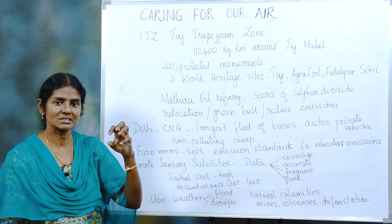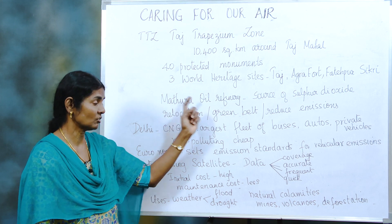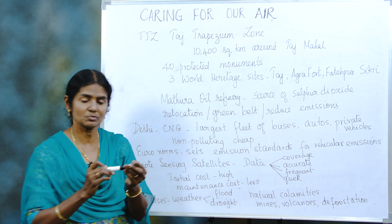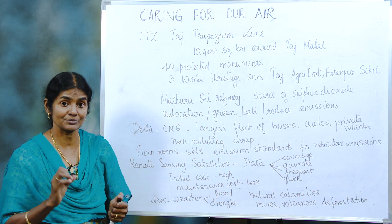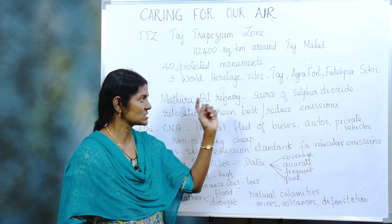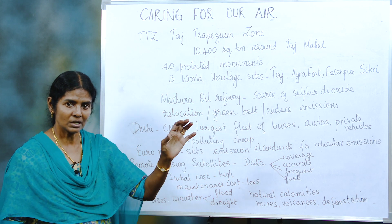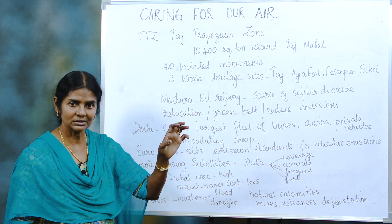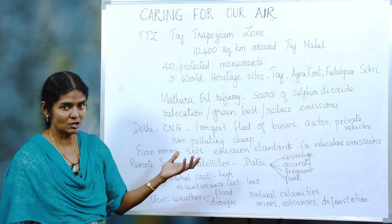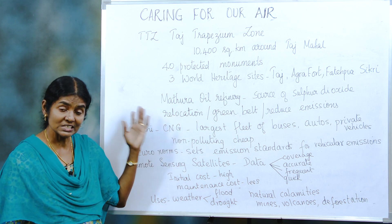Now, who is the culprit here? It's the Mathura oil refinery. The Taj Mahal is made of limestone — calcium carbonate — and for years this oil refinery was emitting sulfur dioxide at very high levels, which attacked and damaged the marble of the Taj Mahal.